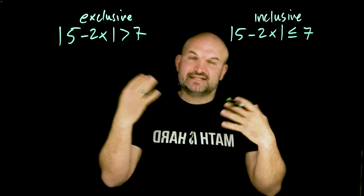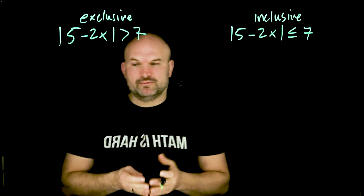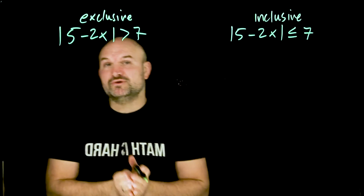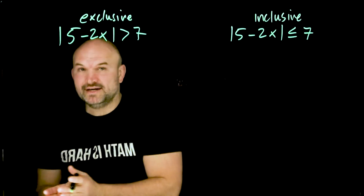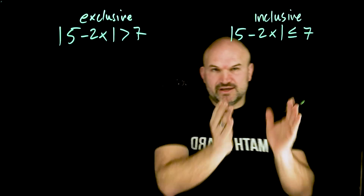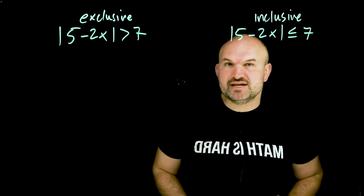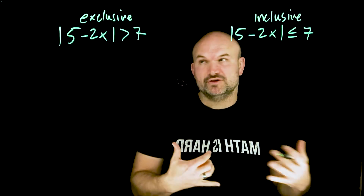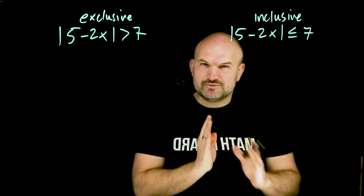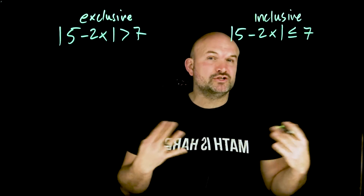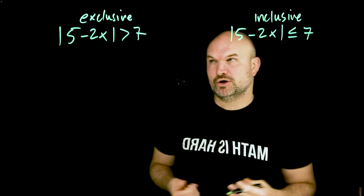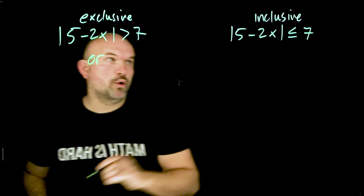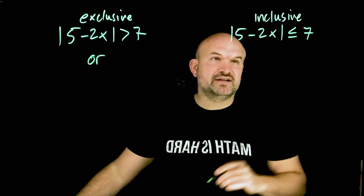When we're looking at an exclusive solution, our solution is either going to be true for one or the other. Whereas when we're looking at something inclusive, we're looking for the value to be true for both of those values. So when we're looking at exclusive, we're thinking of the word 'or'; when we're thinking of inclusive, we're thinking of the word 'and'.